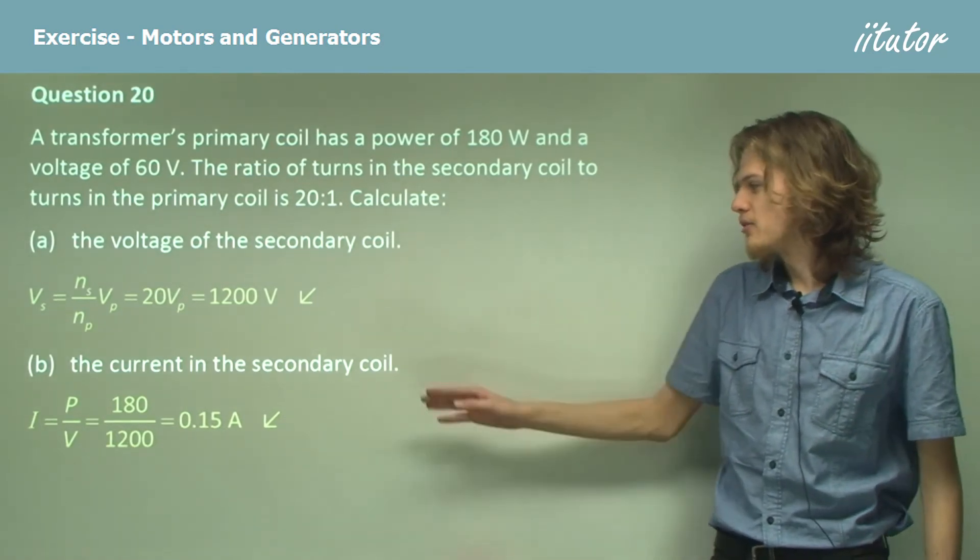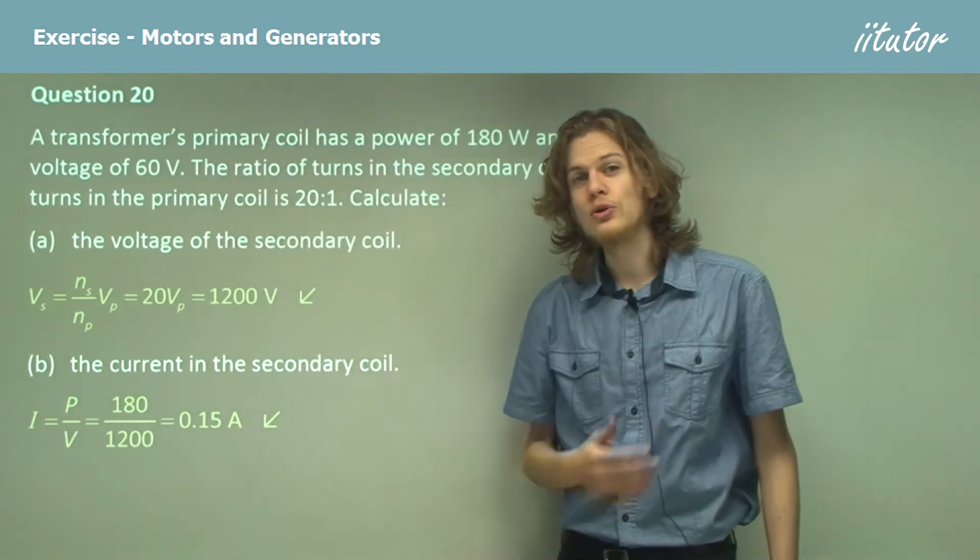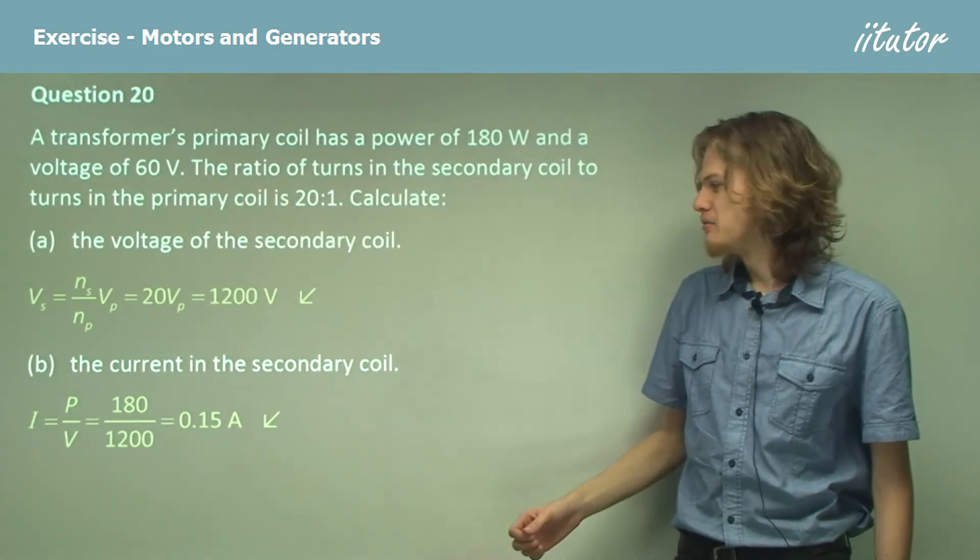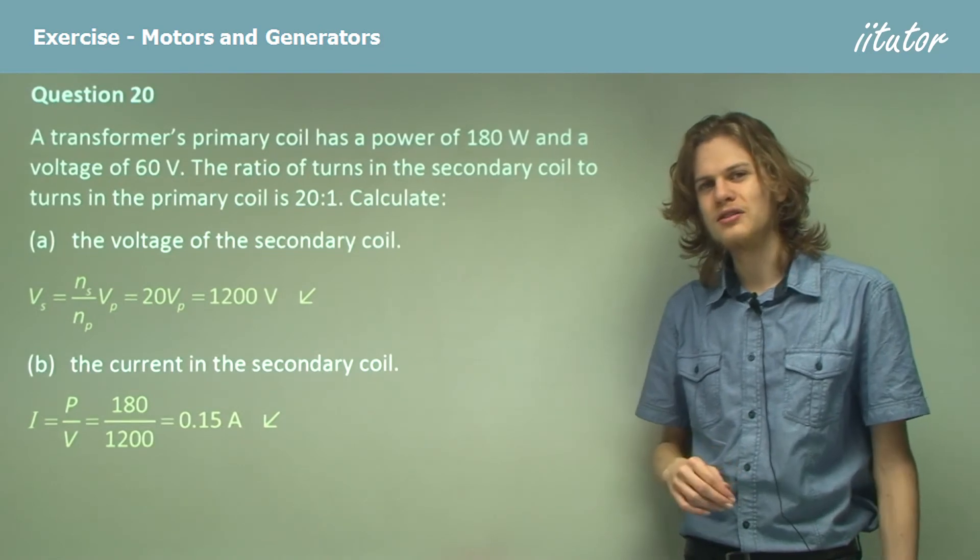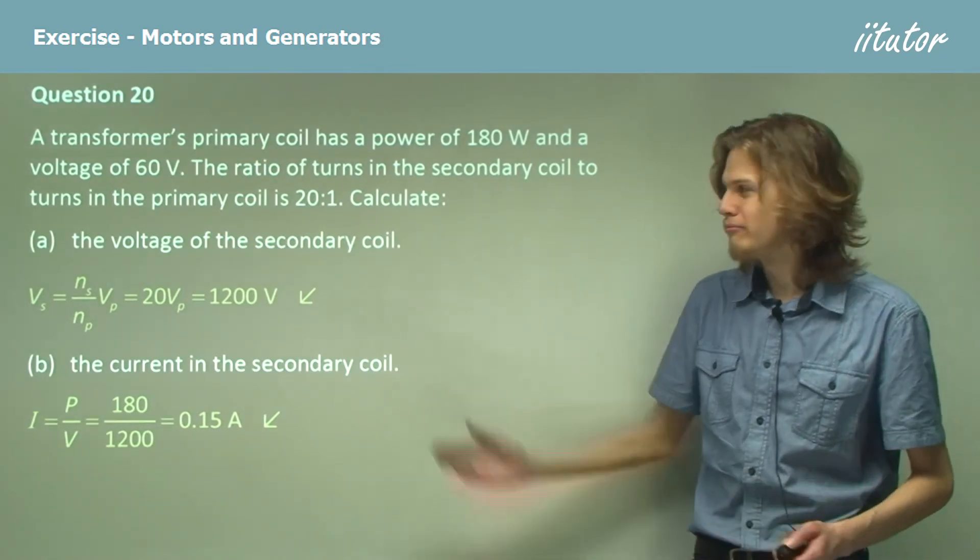If you were to calculate the current in the primary coil, it would be 180 divided by 60, which is, of course, 3. And obviously, 0.15 is much smaller than 3, by a factor of 20.